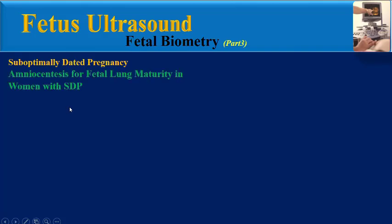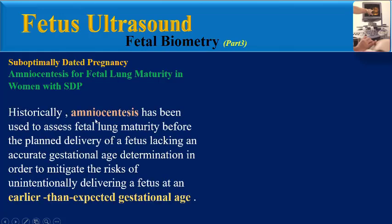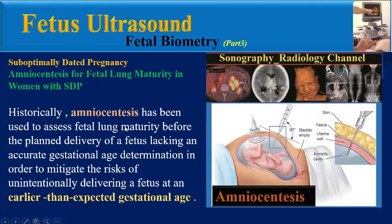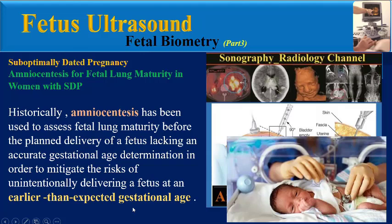There is insufficient data to support a policy for antenatal corticosteroid exposure in the setting of a woman with a sub-optimally dated pregnancy undergoing presumed term delivery. Now, here is a very important question: is amniocentesis needed for fetal lung maturity in women with sub-optimally dated pregnancies?